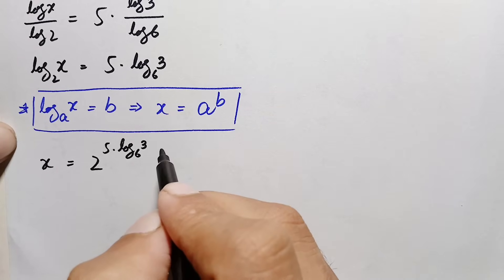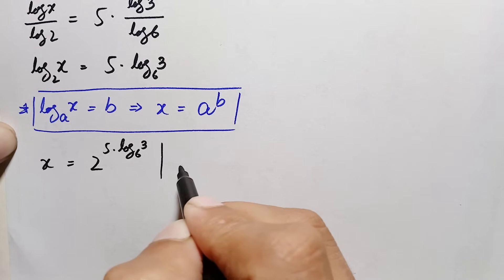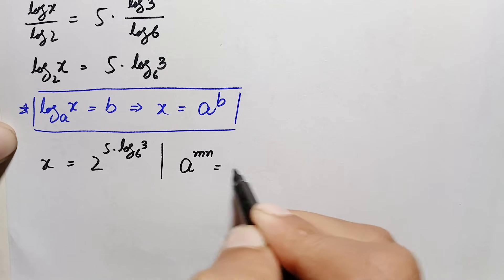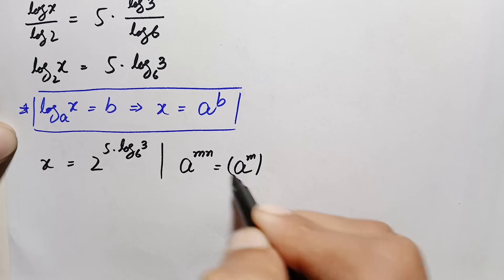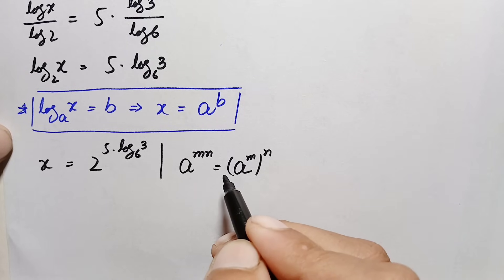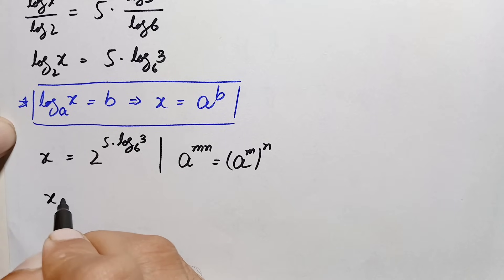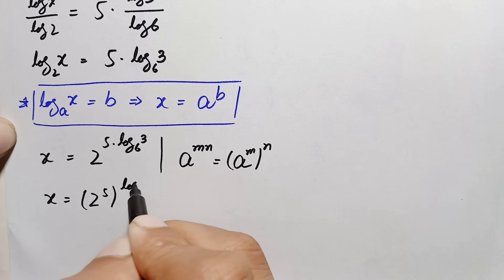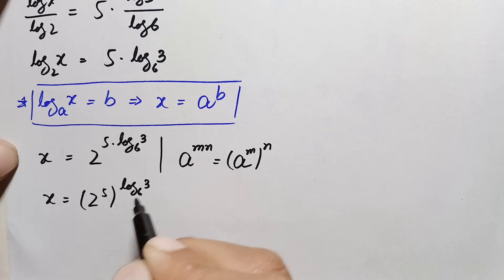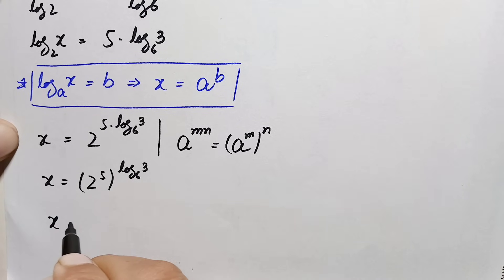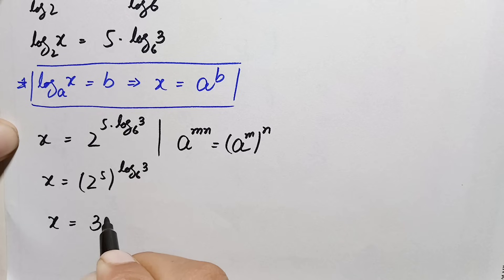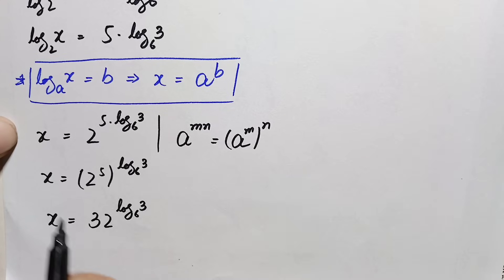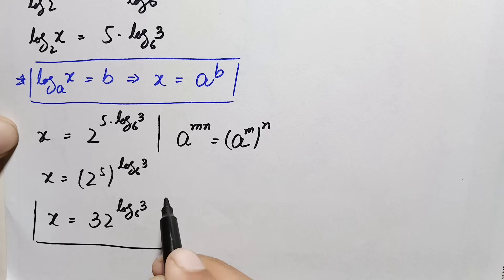In the right hand side, we use the exponential property: a raised to power (m times n) equals (a raised to m) all raised to power n. So this becomes x equals (2 raised to power 5) raised to power (log of 3 with base 6). Since 2 raised to power 5 is 32, we get x equals 32 raised to power log of 3 with base 6.